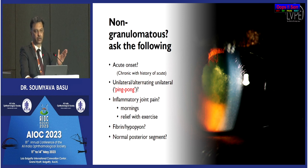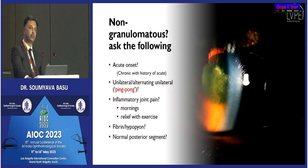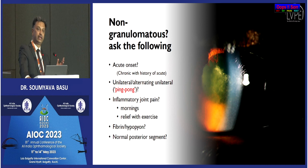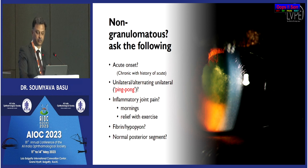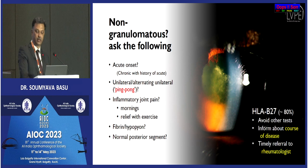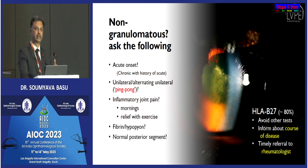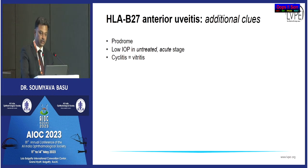In these patients, test for HLA-B27 because it is very likely to be positive. If positive in this clinical presentation, no other test is needed. You can inform the patient about the course of the disease and refer timely to a rheumatologist in case of inflammatory back pain or any other joint pain. Some of these patients will have a prodrome — they will know the disease is coming. The intraocular pressure in untreated patients is typically low; a high intraocular pressure makes B27 very unlikely. Vitritis in these patients represents iridocyclitis, not spillover — the cyclitis naturally leads to vitritis.